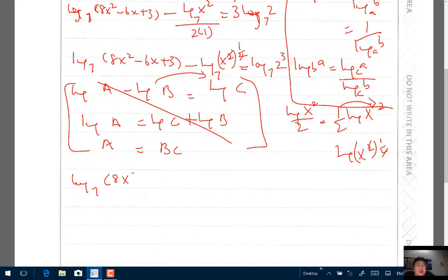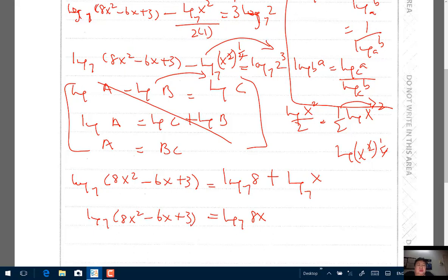log to base 7 of 8x squared minus 6x plus 3 equals log of 8 to base 7. This term here, I move it here. So I add log of x to base 7. So this becomes log of 8x to the, what is on the right? On the left is 8x squared minus 6x plus 3 also log to base 7.